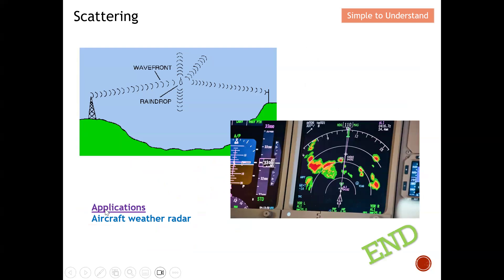Scattering is used to detect weather. When on board an aircraft, the pilot uses a weather radar: the aircraft sends an EM wave, and when scattering occurs, the pilot knows there is rain, snow, or other weather ahead. The pilot can then decide whether to fly through the rain, climb over it, or turn to avoid it. This is the main application of scattering — as a weather radar. With this, I'd like to end my discussion. Please remember to like and subscribe. Thank you so much for the strong support — I hope to see you guys soon. Bye for now.